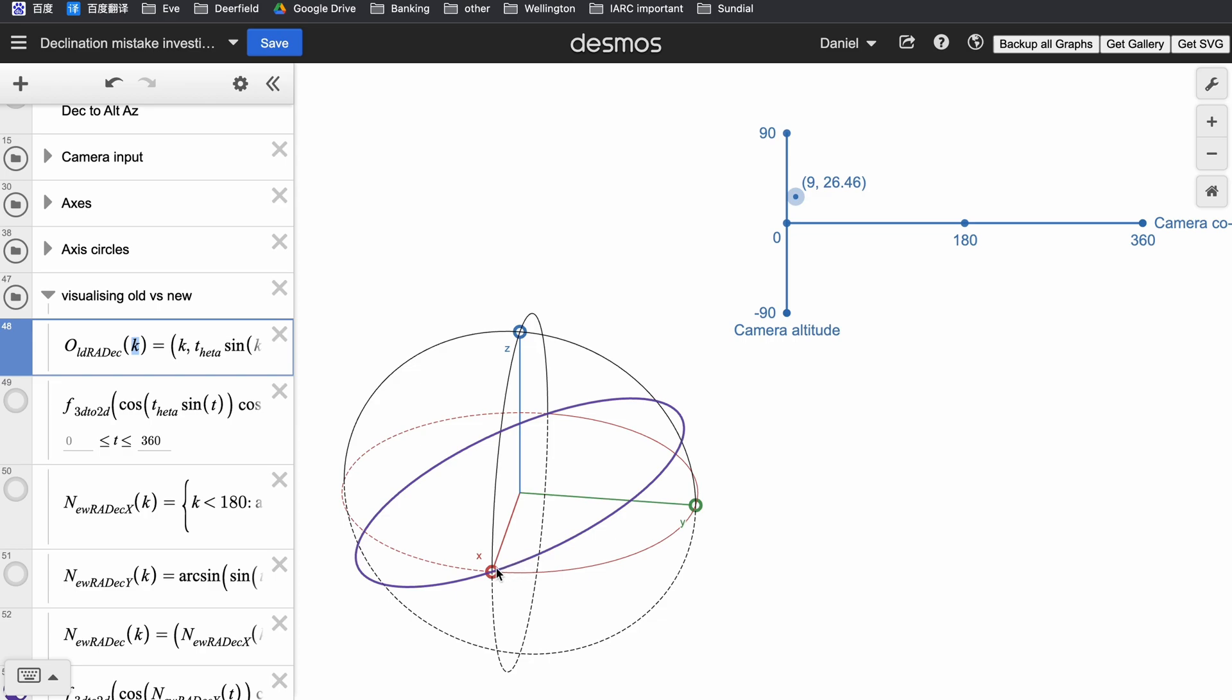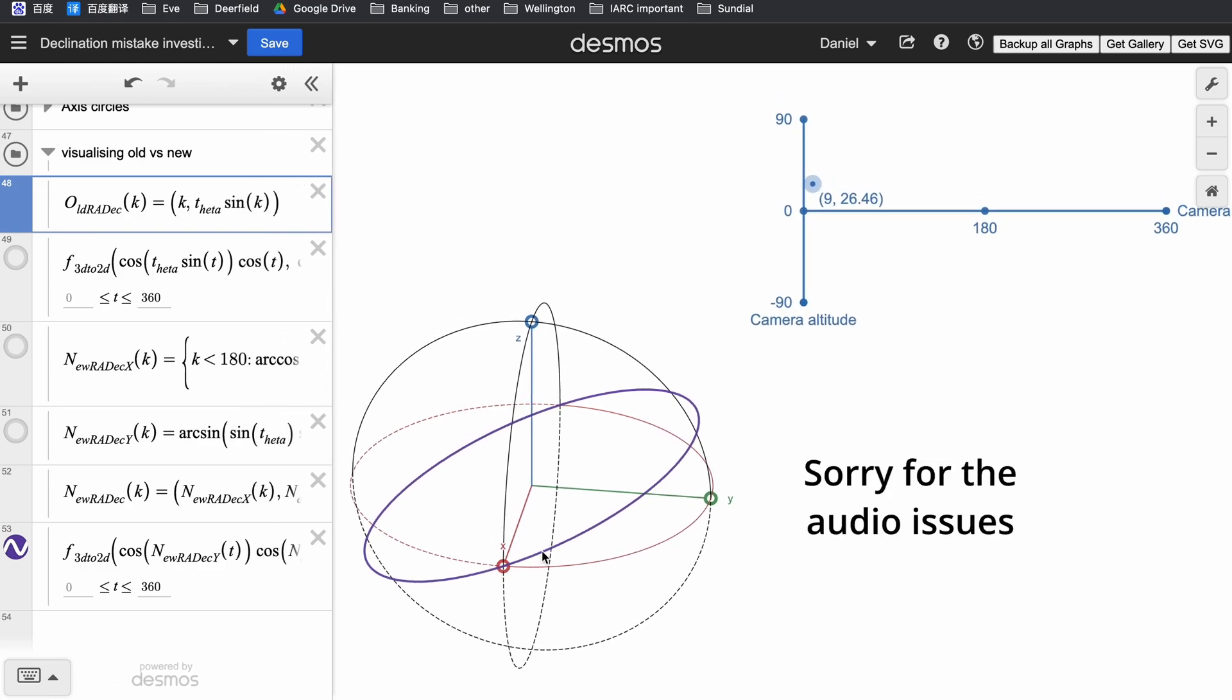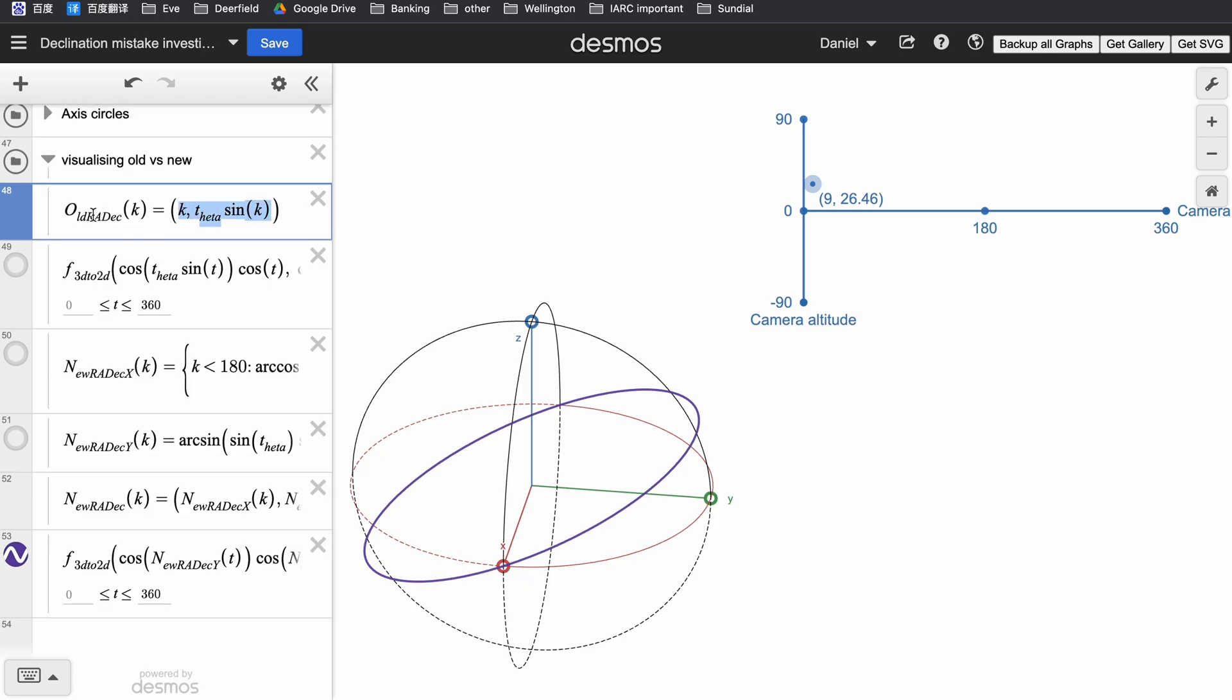So this purple curve is the correct curve. And I'll get into how to calculate the right ascension and declination for each k value on this circle. But what I want to show first is this incorrect guess at what I thought the correct right ascension and declination should be. It's written out here, what I've called old right ascension declination. This is what I originally assumed would be the correct answer.